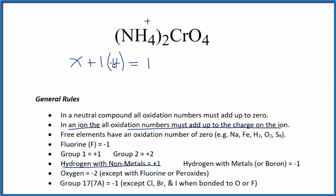X plus four equals one. We can subtract four from each side. X equals minus three. So the oxidation number on the nitrogen here is minus three, and that will be in both of these ammonium ions since we have two.